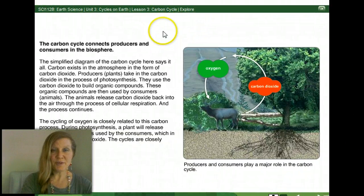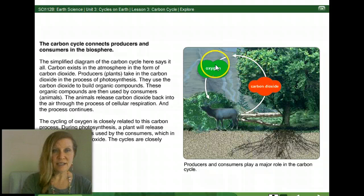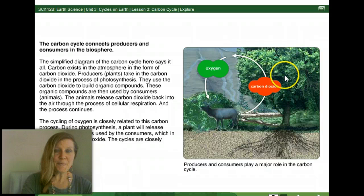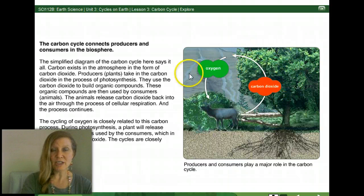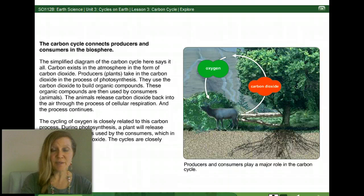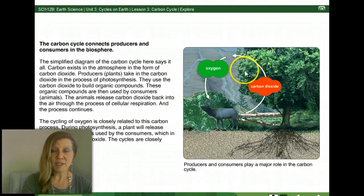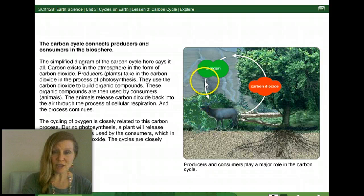The carbon cycle connects producers and consumers in the biosphere through photorespiration. Through photosynthesis and cellular respiration, a simplified diagram shows producers taking carbon dioxide and building organic compounds utilized by many life forms. Through cellular respiration, CO2 is released and reused. Photosynthesis also produces oxygen, which is utilized by many life forms to carry out cellular respiration, producing energy. So during photosynthesis, a plant releases oxygen and uses carbon dioxide as a building block for carbohydrates. Consumers use that oxygen and in turn release carbon dioxide, entering the cycle again.